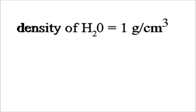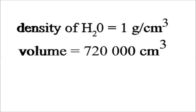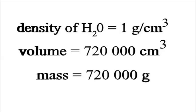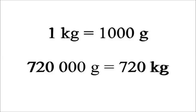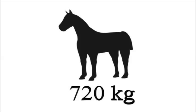This means that 720,000 cubic centimeters of water weighs 720,000 grams. Let's change this to kilograms. One kilogram is a thousand grams. This means the displaced water weighs 720 kilograms. The horse weighs 720 kilograms, the weight of the water it displaced.